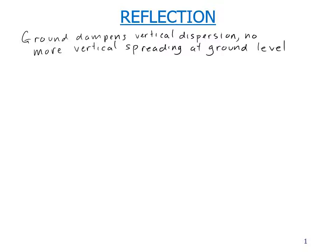The ground dampens vertical dispersion, the turbulent motion, and so there's no more vertical spreading at the ground level. It can't keep going below the ground.